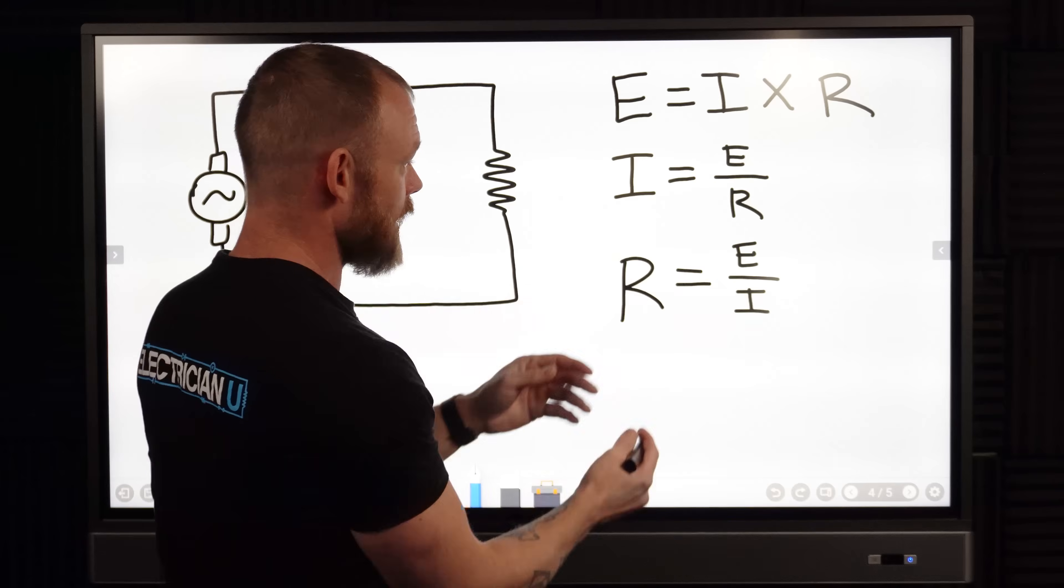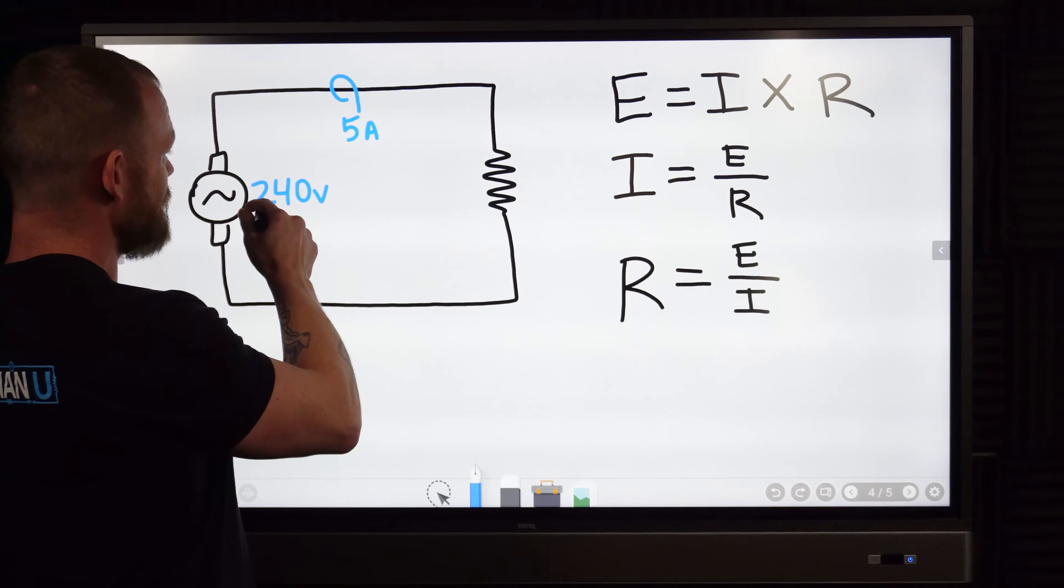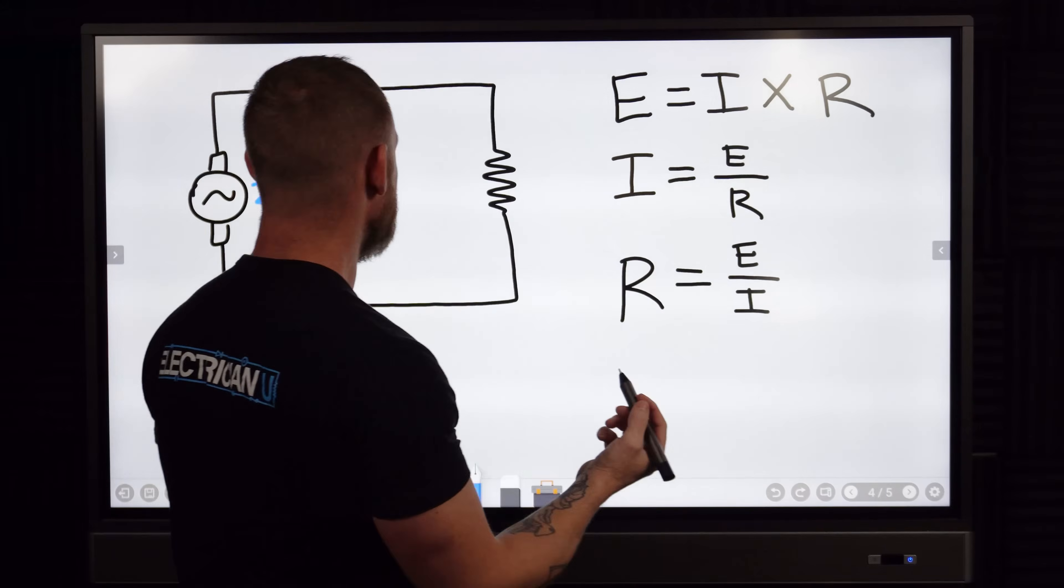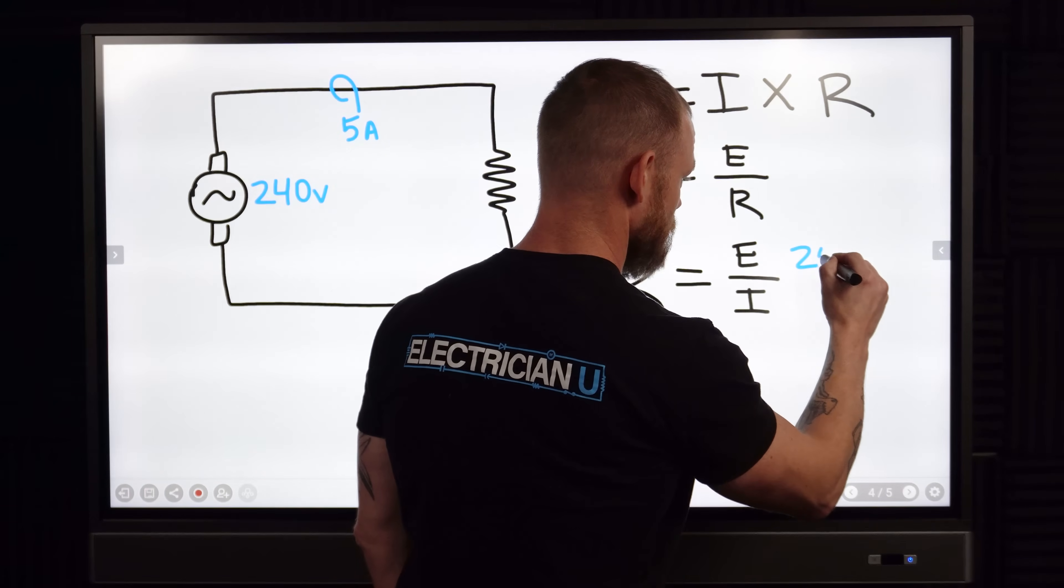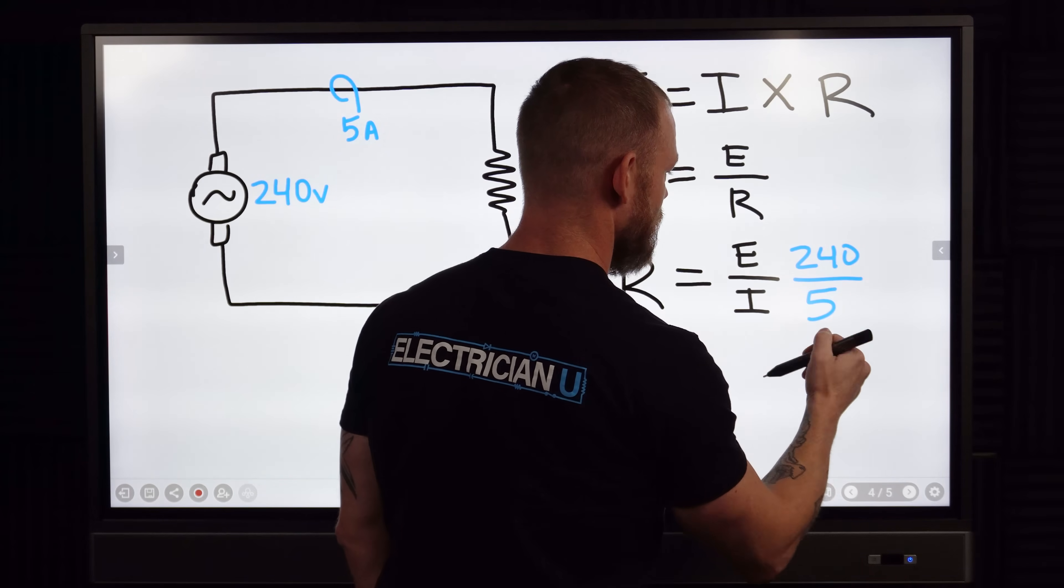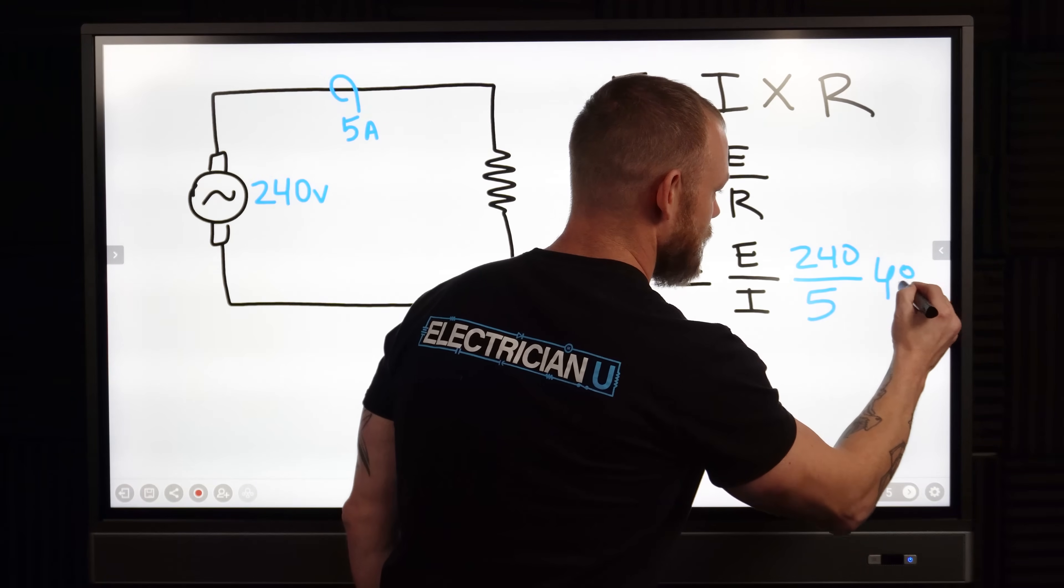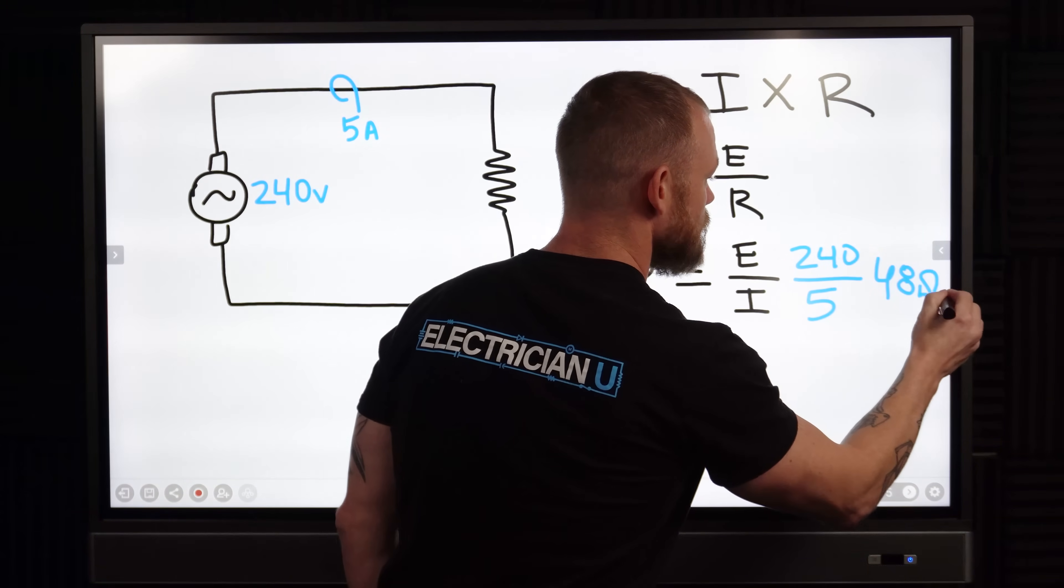So if we have 240 volts and five amps of current running through it, we would just do 240 divided by five, that is 48 ohms of resistance. So in this situation, 48 ohms.